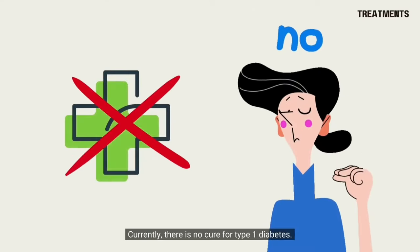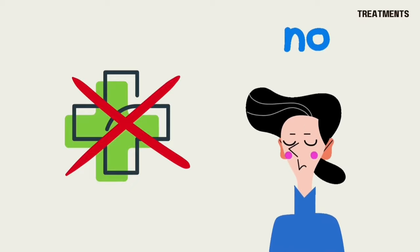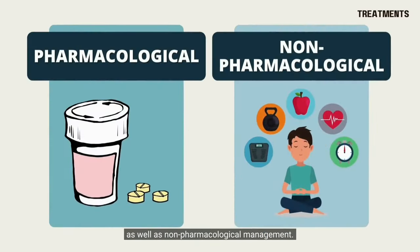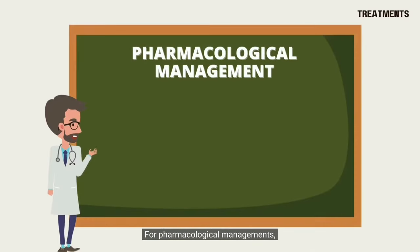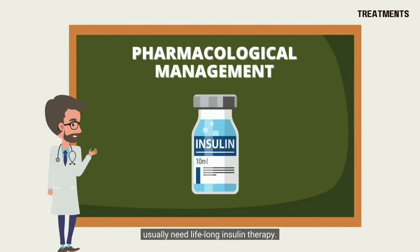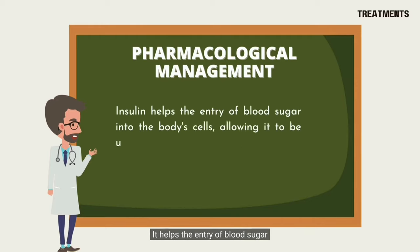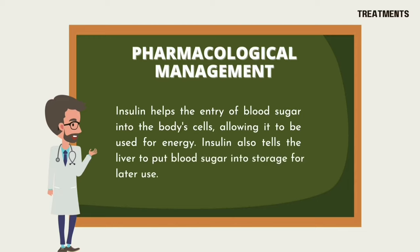Currently, there is no cure for type 1 diabetes. However, it can be managed by pharmacological as well as non-pharmacological approaches. For pharmacological management, type 1 diabetes patients will usually need lifelong insulin therapy. Insulin is a hormone that aids in the regulation of blood sugar. It helps the entry of blood sugar into the body's cells, allowing it to be used for energy. Insulin also tells the liver to put blood sugar into storage for later use.